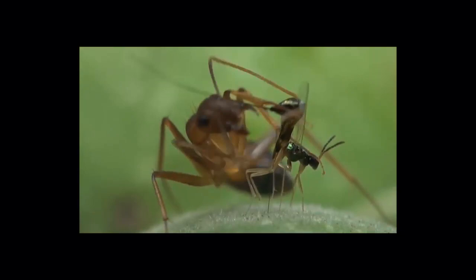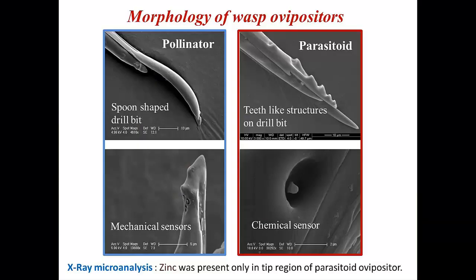There are clear differences observed in the morphology between a pollinator and a parasitoid ovipositor. Further, X-ray microanalysis showed the presence of zinc only in the tip region of the parasitoid ovipositor.